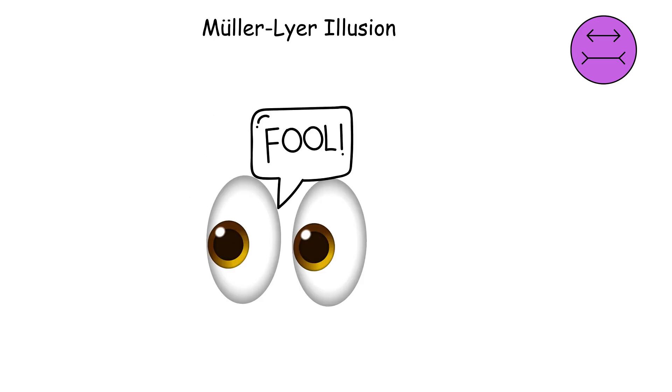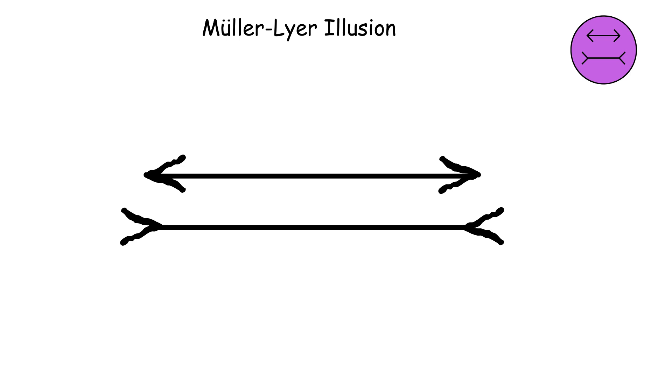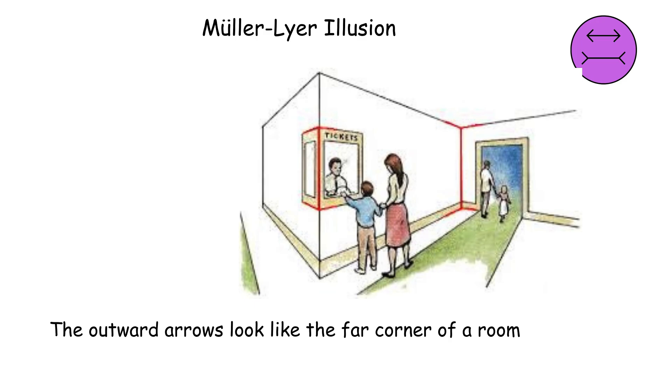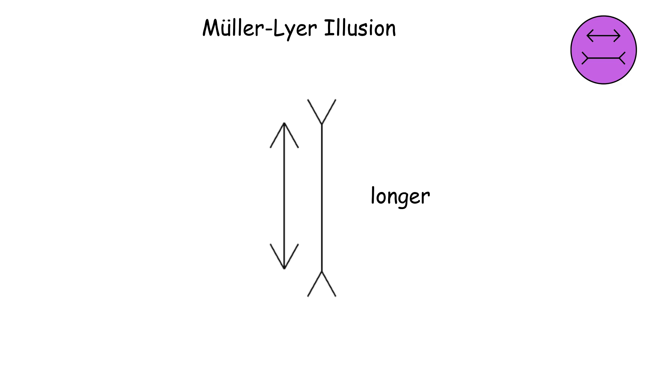The reason your eyes get fooled is that your brain interprets these arrow endings as depth cues, like the corners of rooms. The outward arrows look like the far corner of a room, which your brain assumes must be further away, so it makes the line seem longer to compensate.